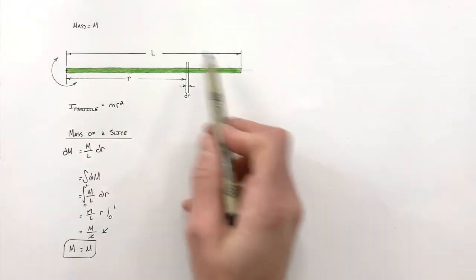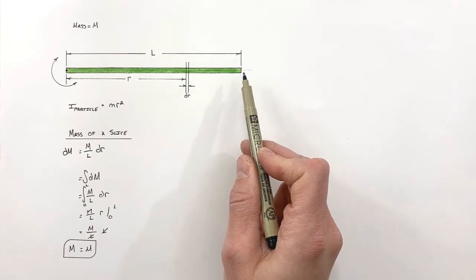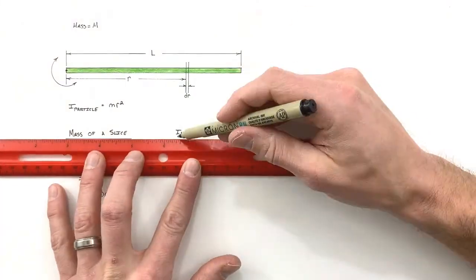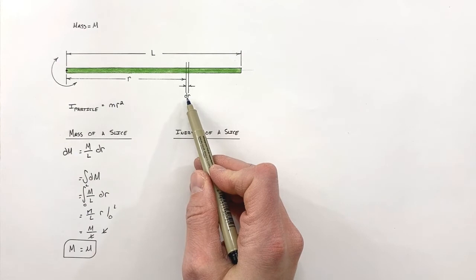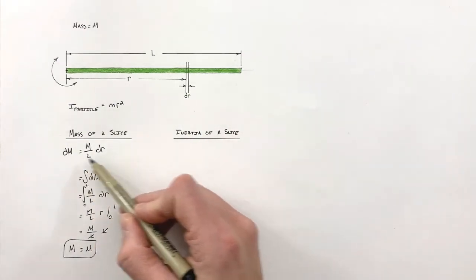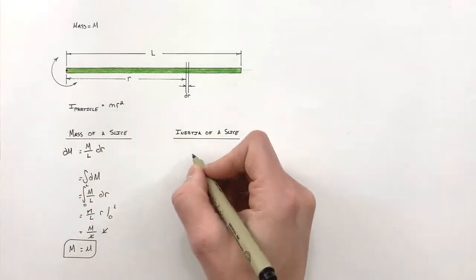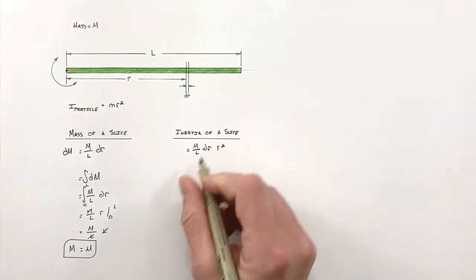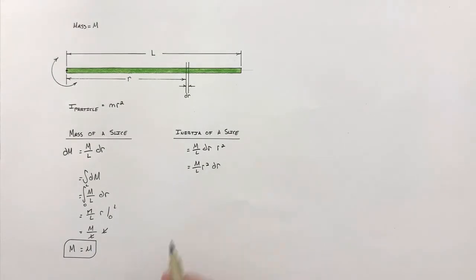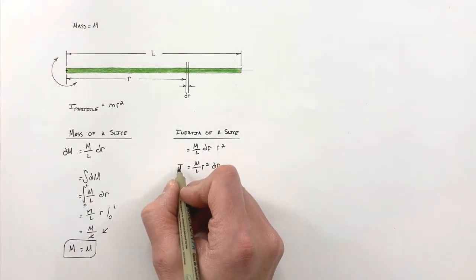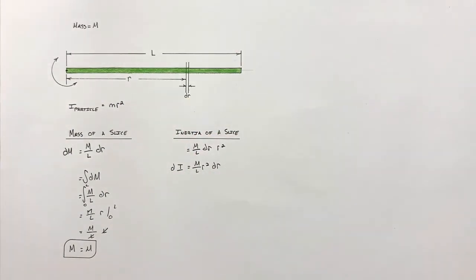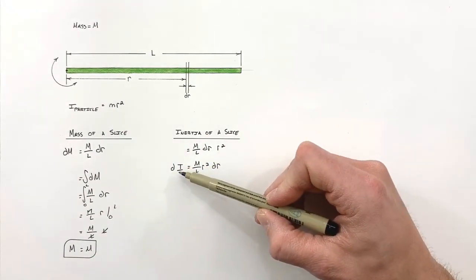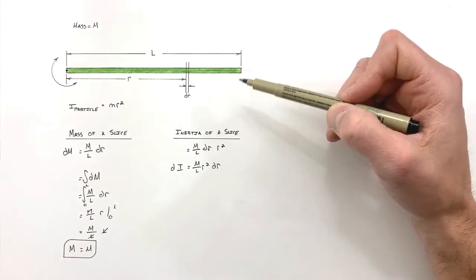Now let's get back to what we're actually trying to solve: the total inertia of the entire rod. Treating each slice as a particle with mass dm and radius r, the inertia of the slice is dI = r² dm. To get the total inertia I, we sum up all these little pieces of inertia by integrating dI from radius zero to L.